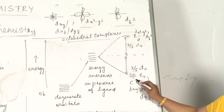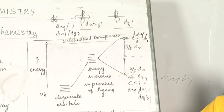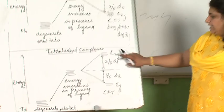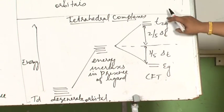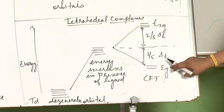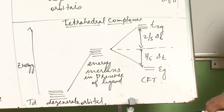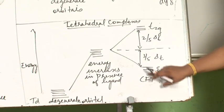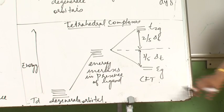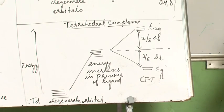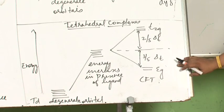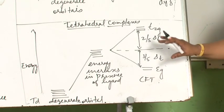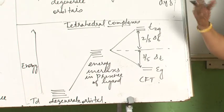In tetrahedral complexes, this Δt, the crystal field splitting gap, is very small. Pairing energy is more, so naturally what will happen? Electrons will be singly occupied: one, two, three, four, five. So you will always have a high spin complex in tetrahedral compounds. Tetrahedral compounds will always be high spin, spin-free, or paramagnetic complexes wherever there is crystal field splitting.